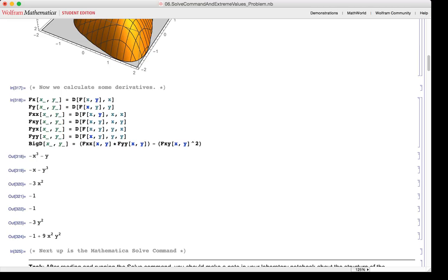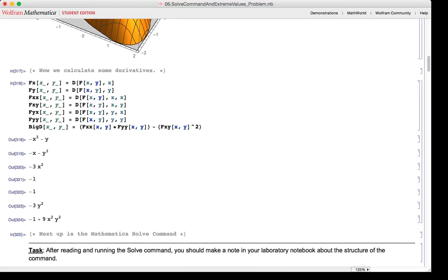These commands down here are the derivatives for the partials for x and y for the first derivative, and then the second partials for x, x, x, y, y, x, and y, y. Big D, you'll see what that is later. They're also calculated as well, because the output is not suppressed via the semicolon.